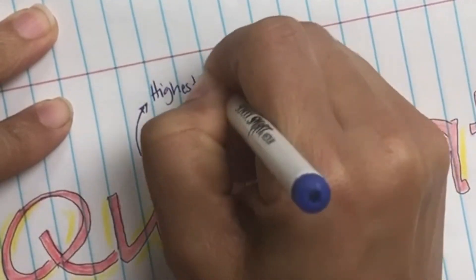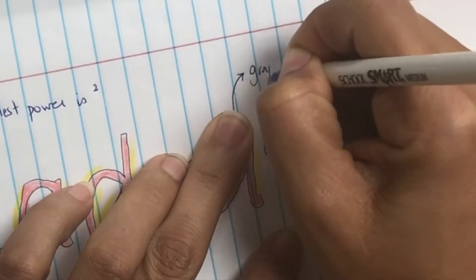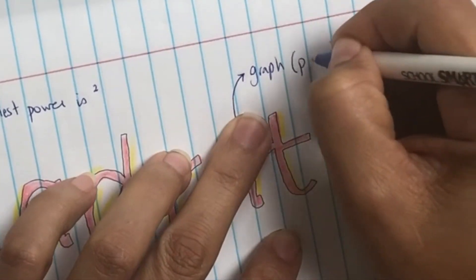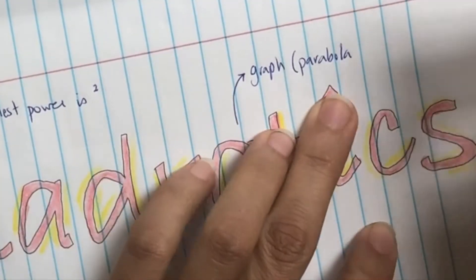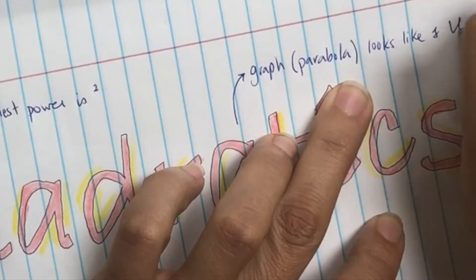Alright, so quadratics - the highest power is going to be a squared term. Also when you graph it, it's called a parabola and it looks like a U or an N. This is a listening check, write 'or an N.'